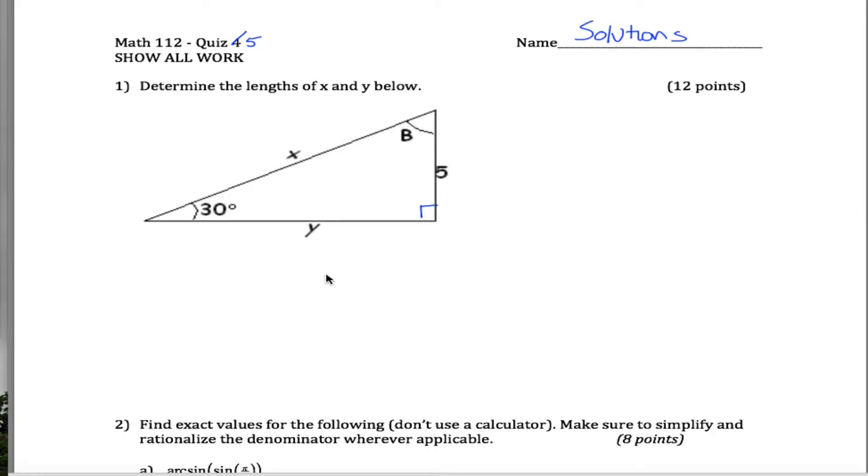There's a couple of different ways you can do this. I prefer to first find x, and the way I'm going to do that is I have a trig function that relates together the side opposite an angle and the hypotenuse. So one way you get there is SOHCAHTOA. SOHCAHTOA tells you that the sine of this 30 degree angle must be equal to the length of the side opposite, which is 5, divided by the hypotenuse, which is x.